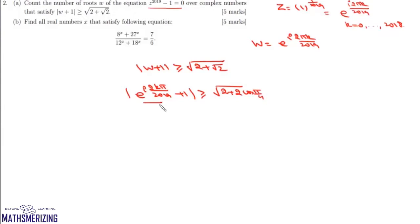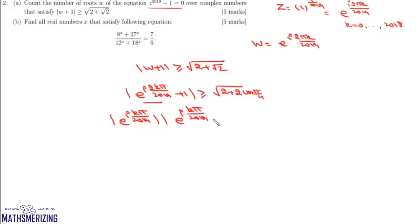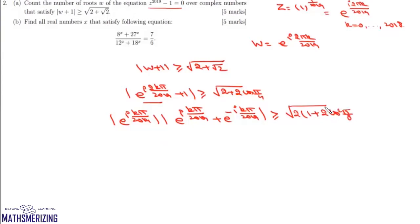We take e^(ikπ/2019) as a common factor, so we can write the modulus of e^(ikπ/2019) times [e^(ikπ/2019) + e^(-ikπ/2019)]. The right-hand side, taking 2 common, gives 1 + 2cos²(π/8) - 1, so the ones cancel.